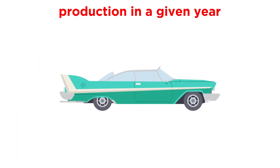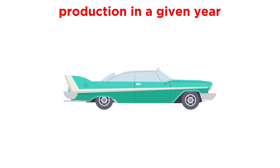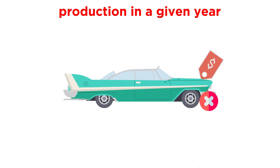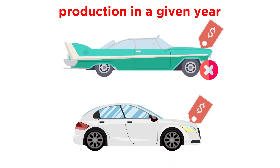GDP also only counts production in a given year. If an old car is sold this year, economists don't count it as part of GDP, since the car wasn't produced this year. They only count new cars sold this year as part of GDP.